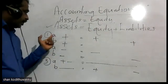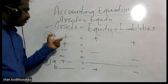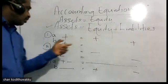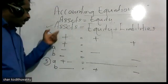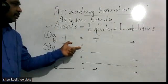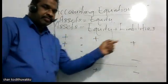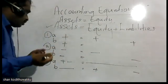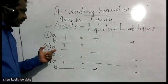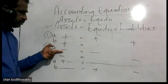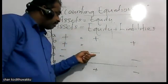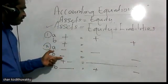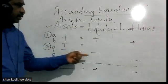Number one: increase in assets equals increase in equity. Number two: increase in assets equals increase in liabilities. Number three: decrease in assets equals decrease in liabilities.